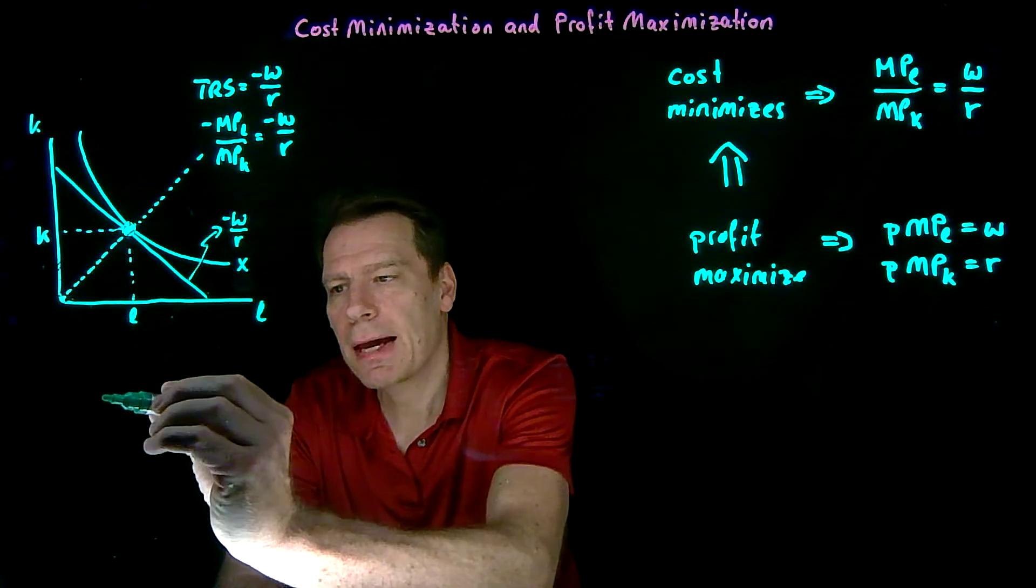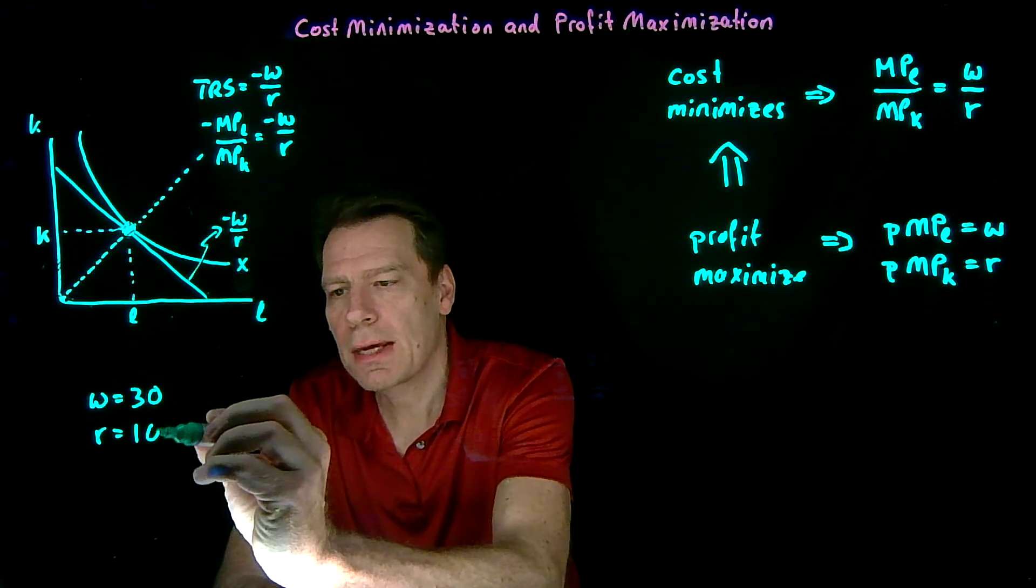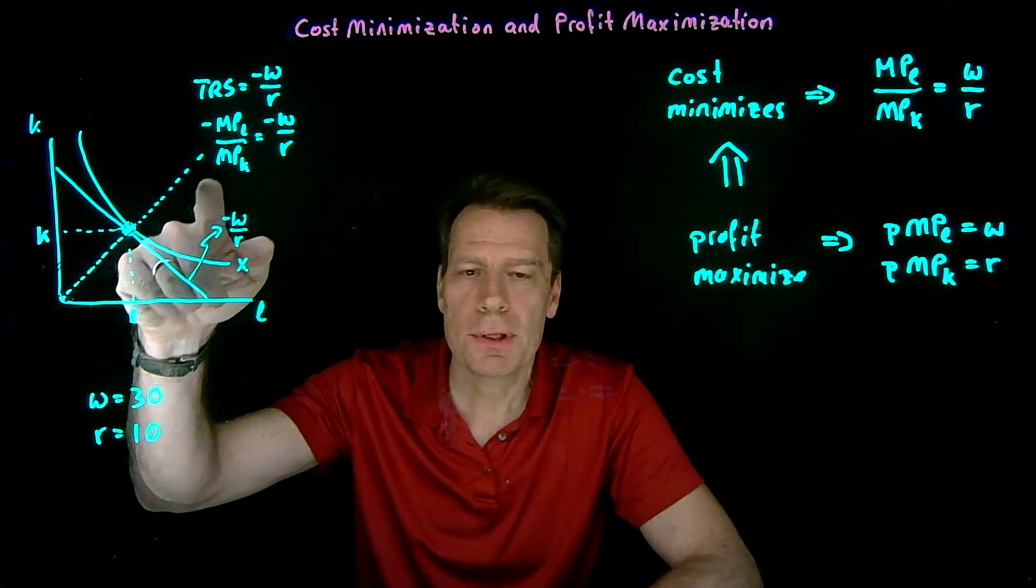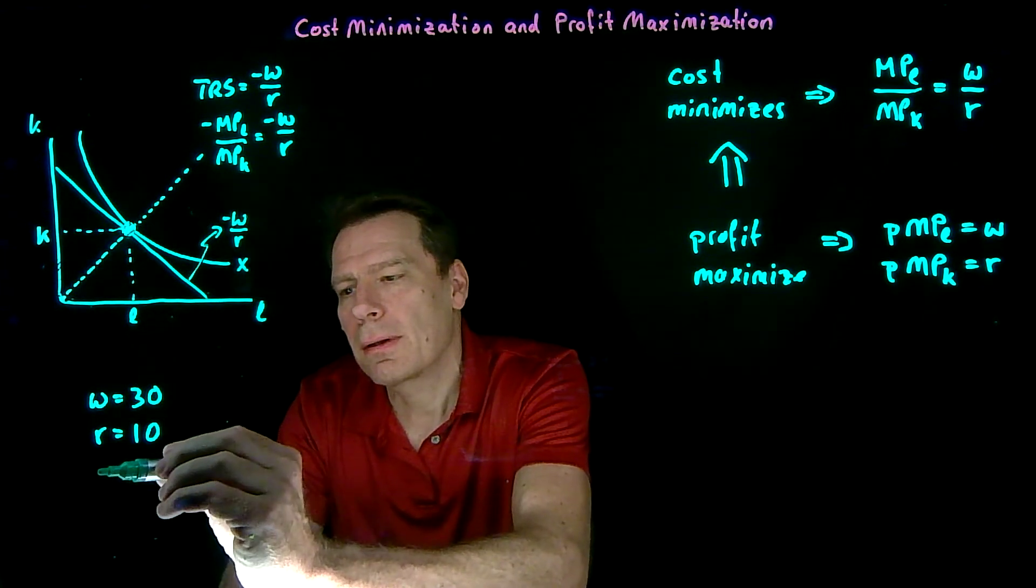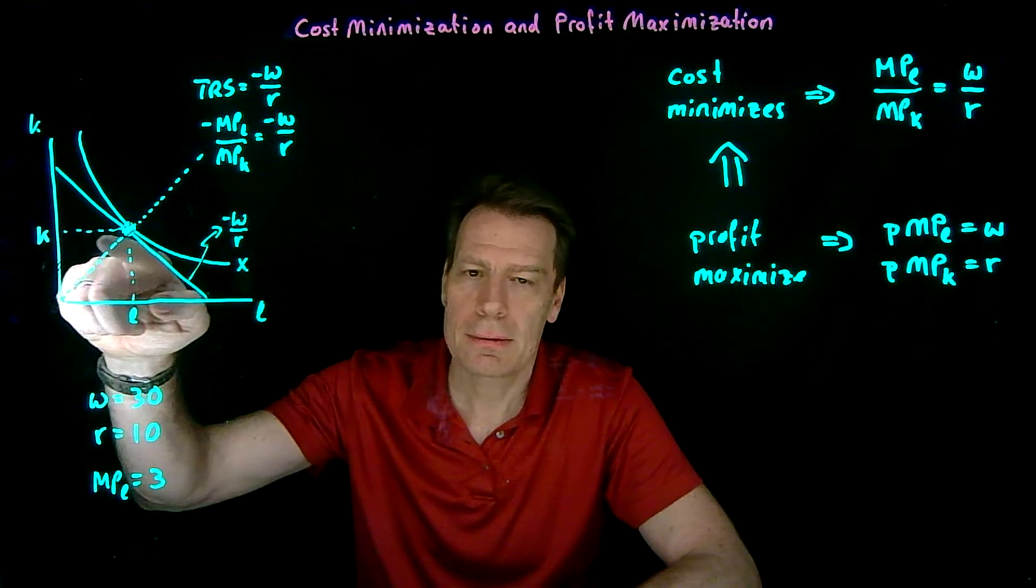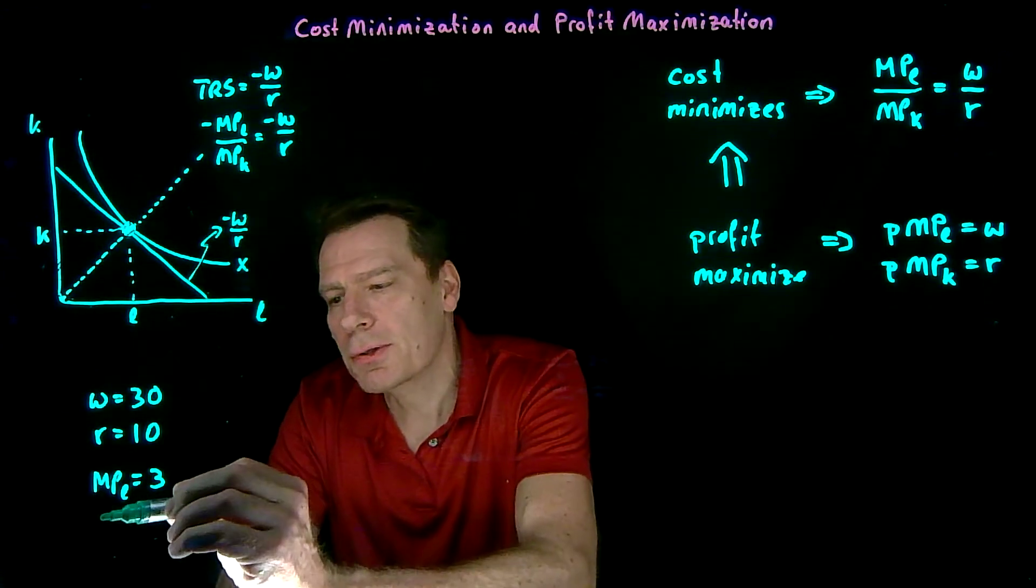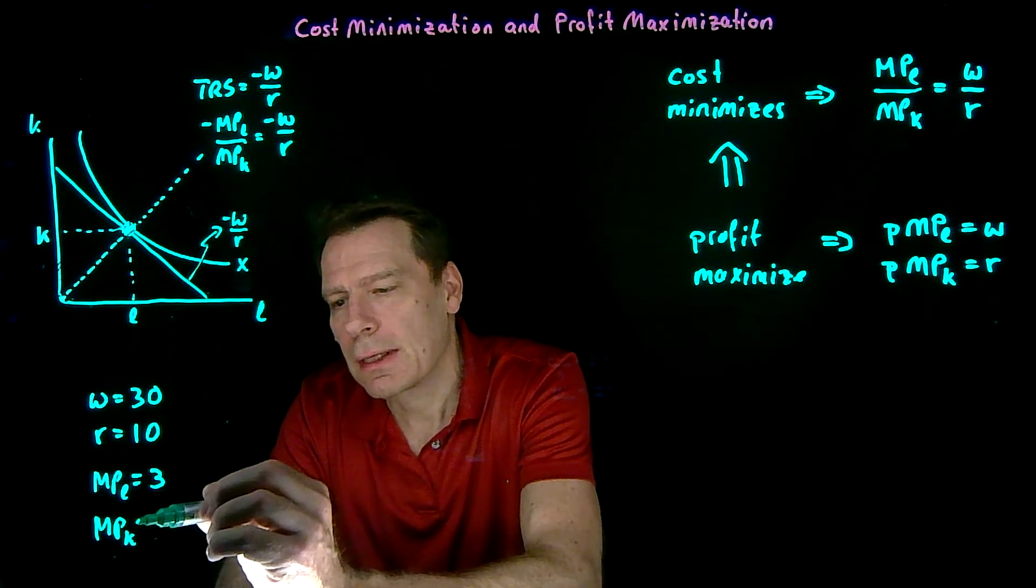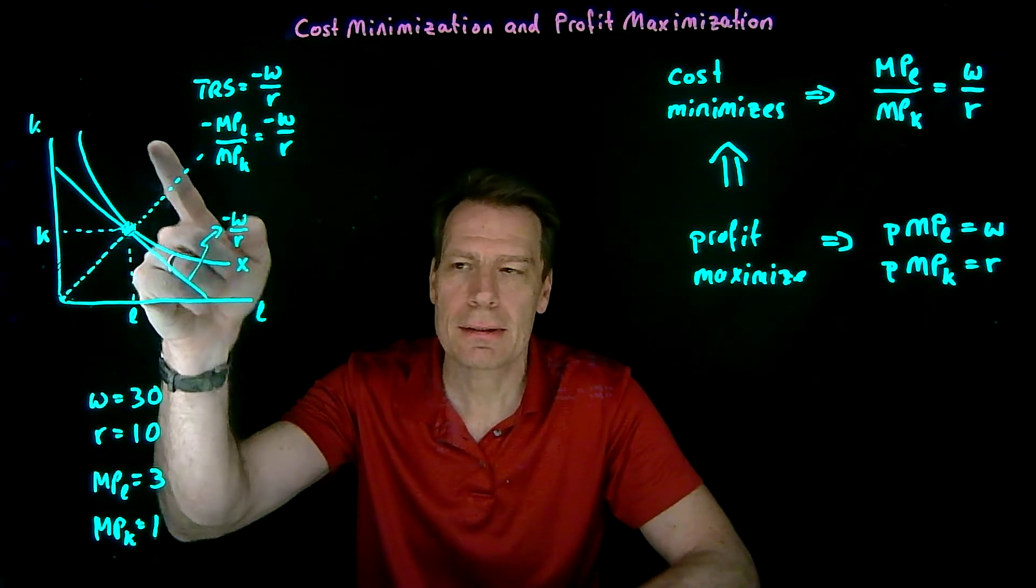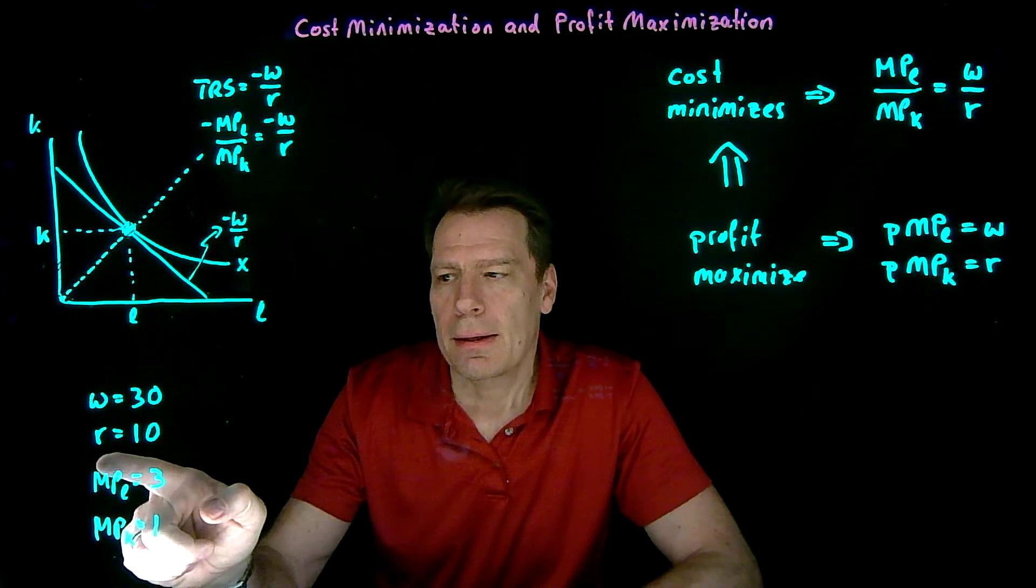Suppose, for example, that we had a wage for workers that's equal to 30, a rental rate that's equal to 10. And suppose that we are currently located on this ray from the origin where the marginal product of labor is equal to 3, so holding capital fixed, the slope of that vertical rate is 3. And the marginal product of capital is equal to 1, so holding labor fixed and taking that vertical slice, at this point the slope of that vertical slice is equal to 1.